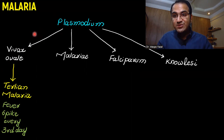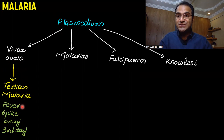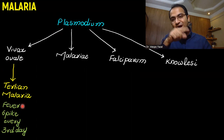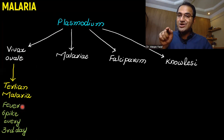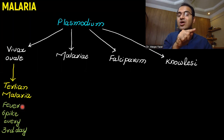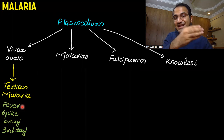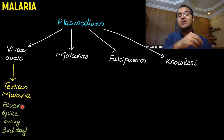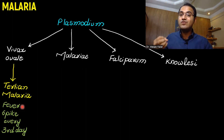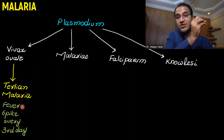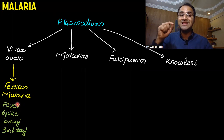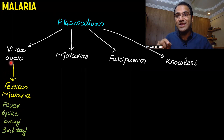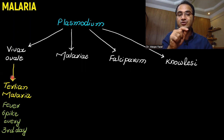Plasmodium vivax and plasmodium ovale usually cause tertian malaria — a fever spike every third day. You see this pattern because during the life cycle, when plasmodium merozoites are replicating in blood, they lead to rupture of RBCs. The rupture releases merozoites into the blood, causing fever spikes and chills. In the life cycle of plasmodium vivax and ovale, this rupture occurs on the third day, hence tertian malaria.